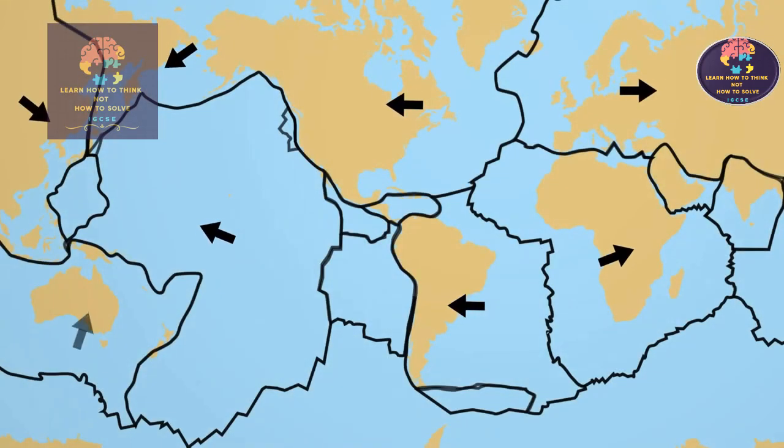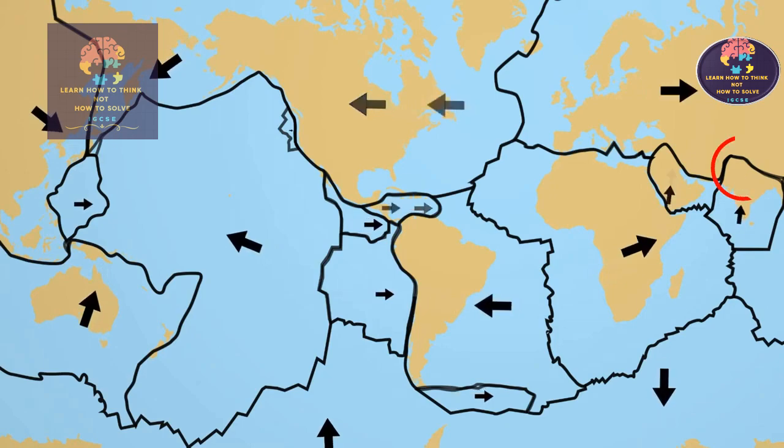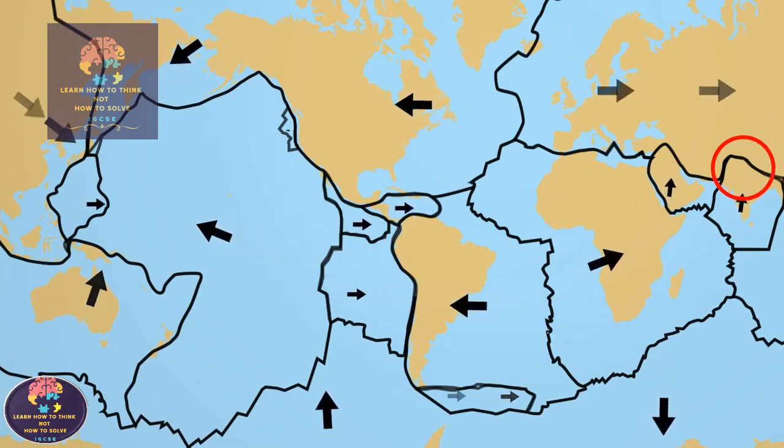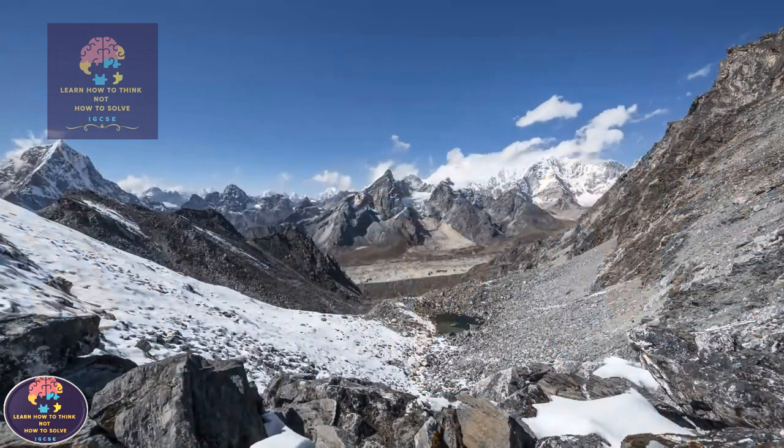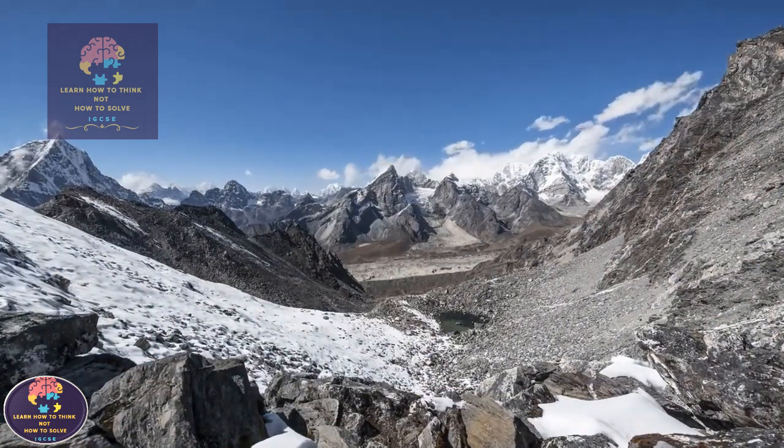You can see this is happening between tectonic plates like the Indian and Eurasian plates, where the force of the two plates colliding has created the mighty Himalayas mountain range.